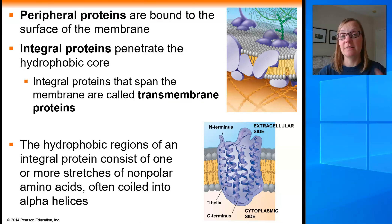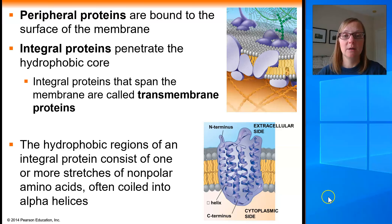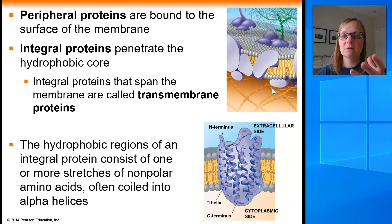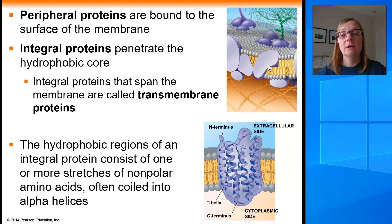Membrane proteins come in a variety of kinds: peripheral proteins and integral proteins. Peripheral proteins are bound to the surface of the membrane — they're attached to the top or bottom but don't contact the hydrophobic core inside. Integral proteins, on the other hand, actually penetrate into the center of the membrane, touching the hydrophobic core where the fatty acid tails are. Several proteins shown in the figure are integral proteins.